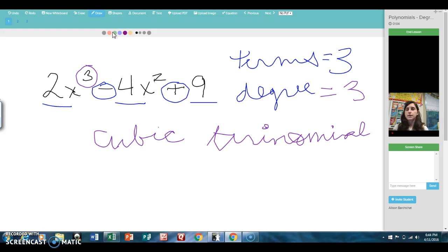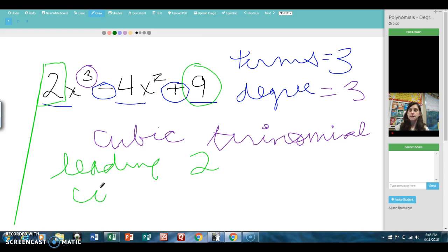Now let's talk about the leading coefficient. Just like it sounds, the leading coefficient is the first number that you see. It has to be attached to the biggest degree term. So the leading coefficient here is the 2. The constant term is the number that has no variable associated with it. So the constant in this problem is 9.